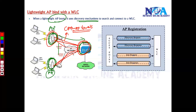Once these access points are connected, the WLC acts as a centralized hub for all access points. Each access point builds tunnels with this centralized WLC, and technically you may have hundreds of access points all connected centrally to the WLC.